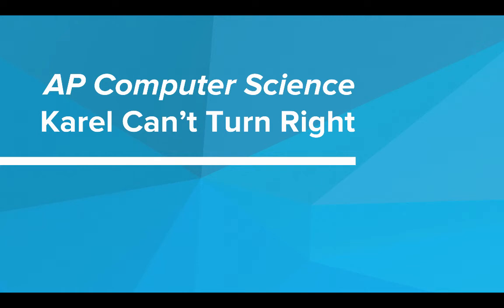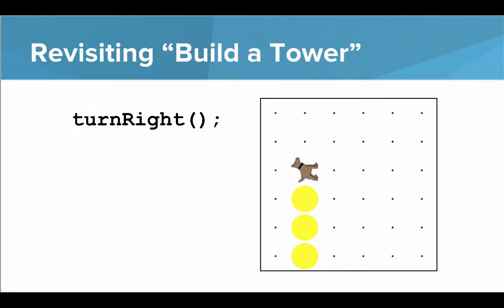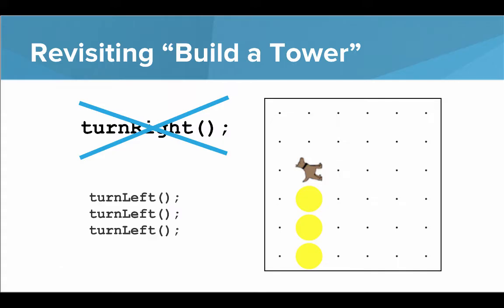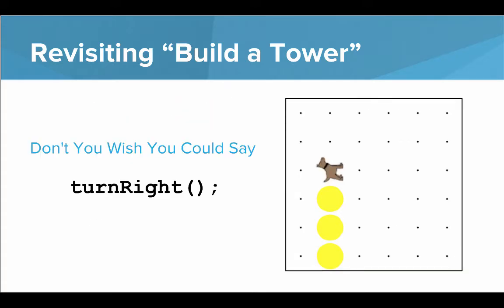In this video we're going to talk about something you may have already noticed, which is that Carol can't turn right. Let's revisit our build a tower program. You were probably in a position where you had Carol at the top of a tower and you wanted to tell Carol to turn right, so you maybe wrote a command that looked like this. But if you called it, you would have gotten that error because Carol can't turn right — it's not one of the words that the dog knows. So what you had to do instead was turn right by turning left three times. But don't you wish you could say turn right? That was what you really wanted to say. At this point in the program, it would be natural to tell Carol to turn right.